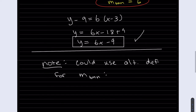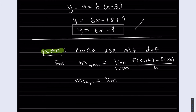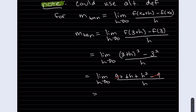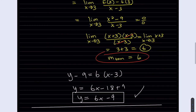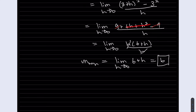As mentioned before, we could use the different definition for mtan. Let's go ahead and do it for the same problem. We get the same thing — mtan was 6 using the other definition. Those canceled and I was left with 6h plus h-squared; I factor out an h. Make sure you don't just divide only one of them by h — that's a common mistake.